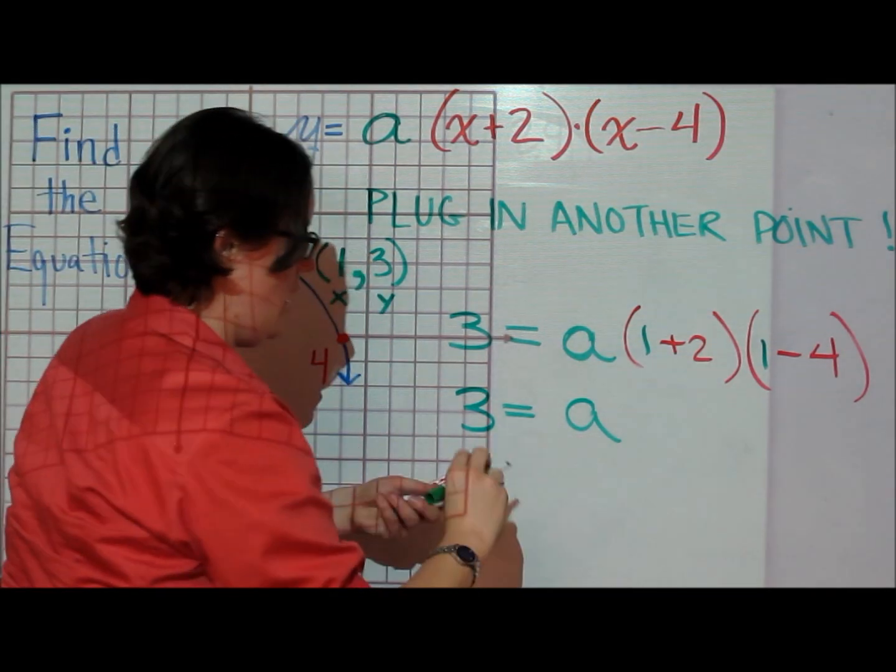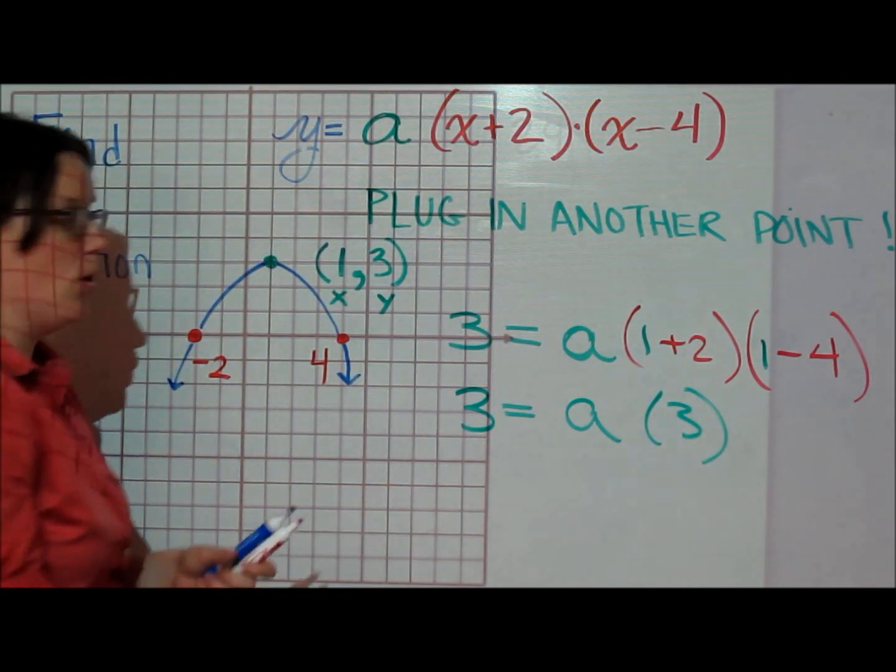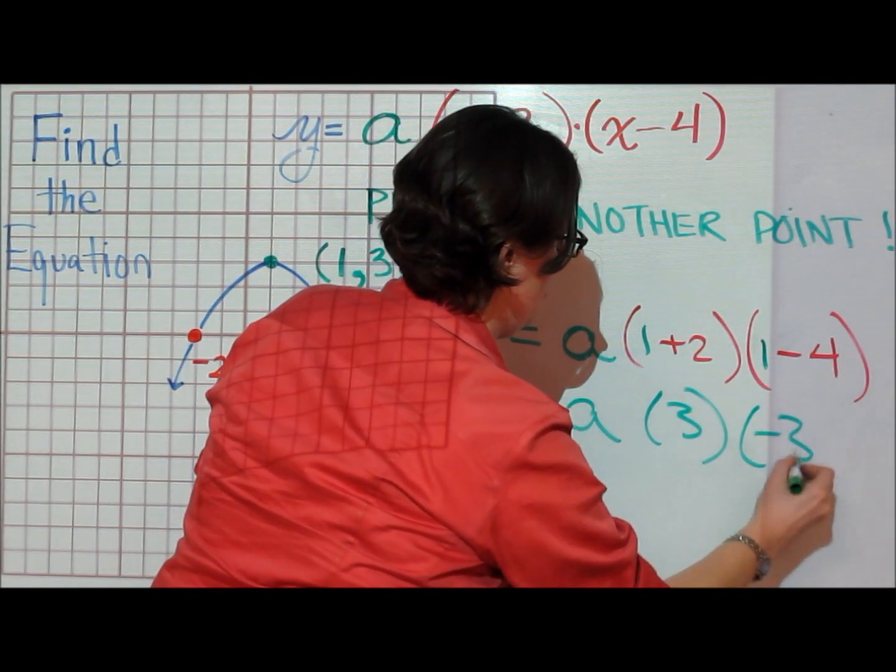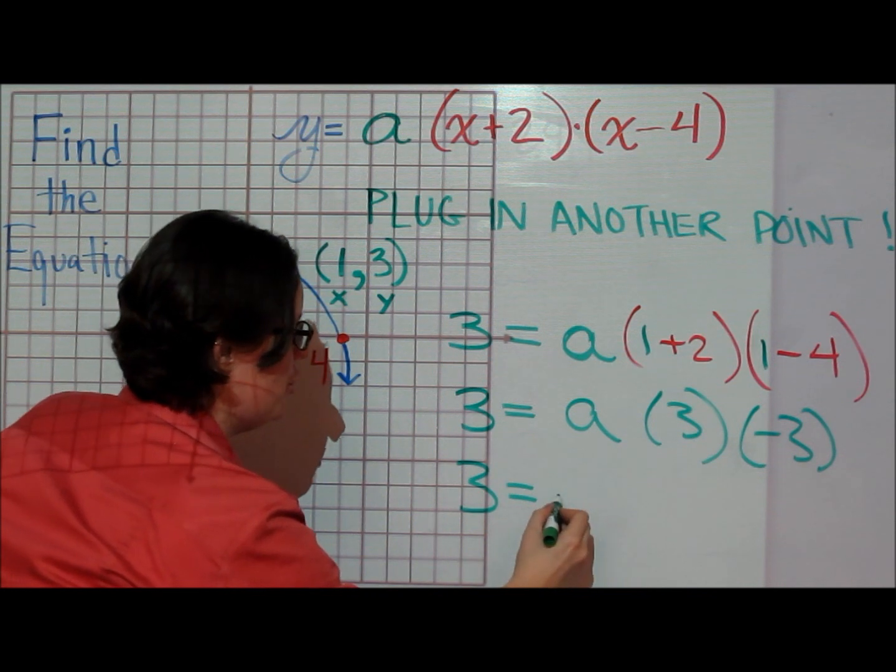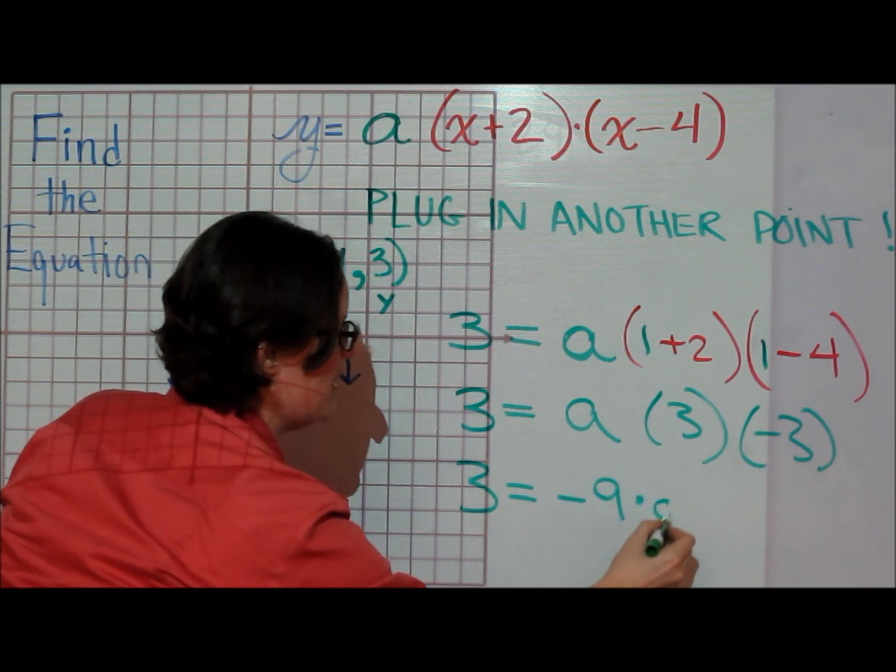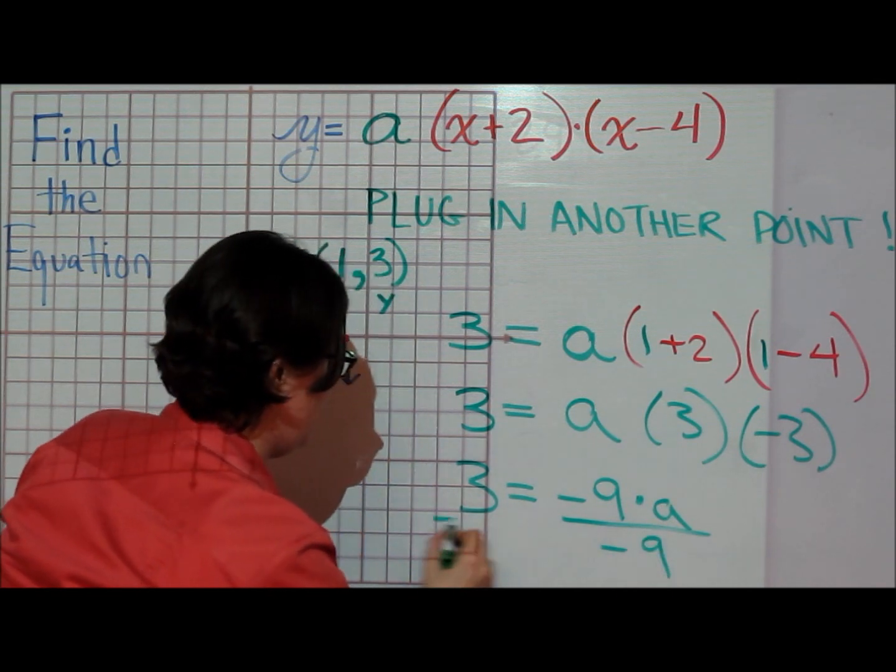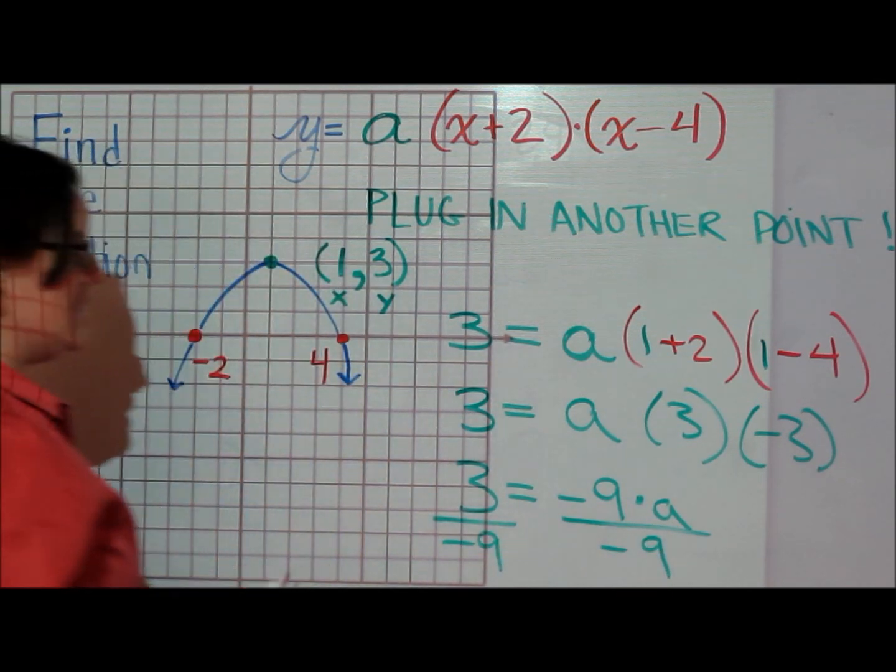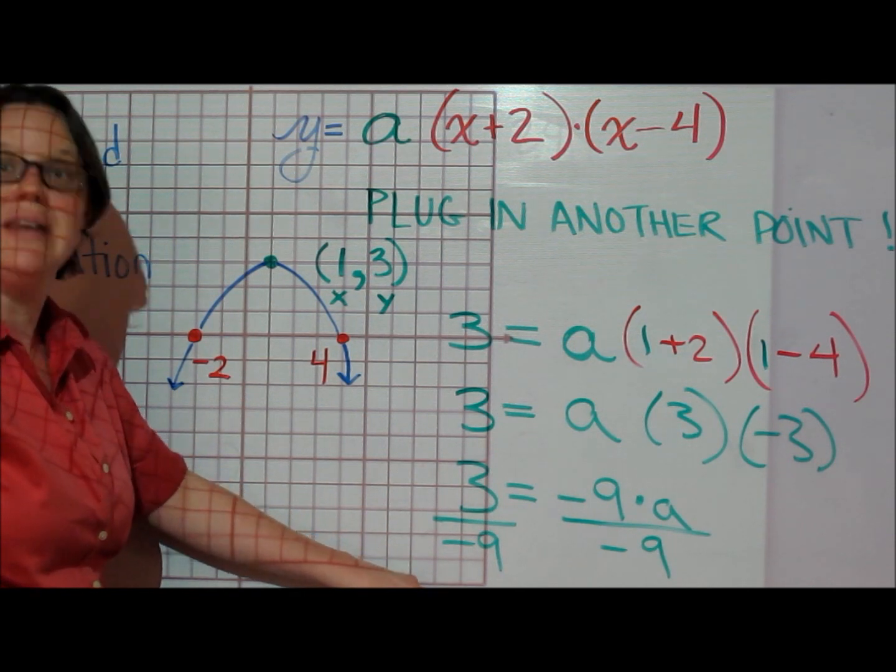1 plus 2 gives me 3. 1 minus 4 gives me negative 3. So I happen to know that 3 is equal to negative 9 times a. If I divide both sides by negative 9, I find that a is equal to 3 divided by negative 9, which is negative 1 third.